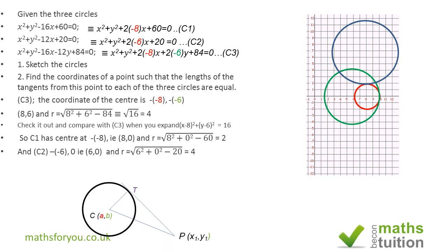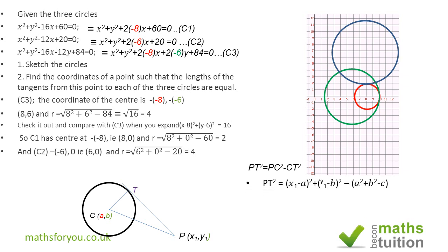For the next part, we want to find the length of a tangent starting from an external point (x₁, y₁) to a point T on the circle. Since the radius to the point of tangency is perpendicular to the tangent, we have a right-angle triangle. So PT² = PC² − CT², where CT is the radius. PC² expands as (x₁ − a)² + (y₁ − b)², where (a, b) is the center.